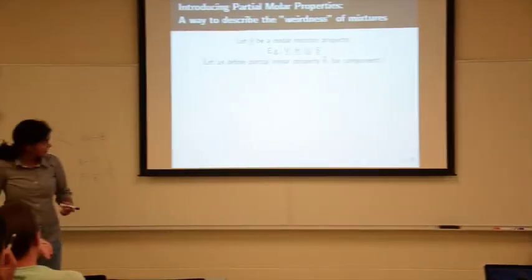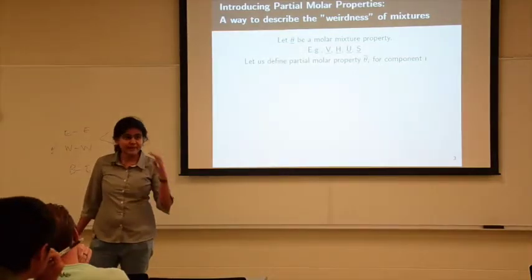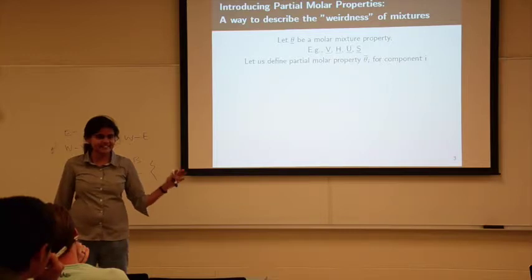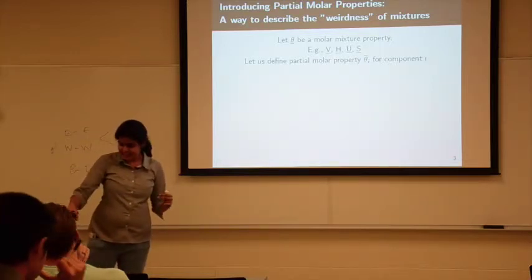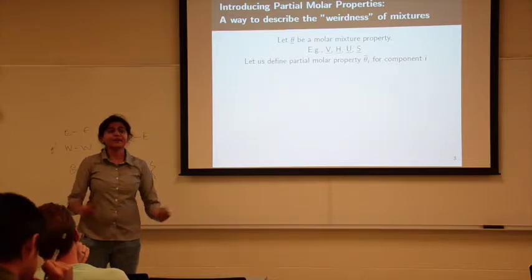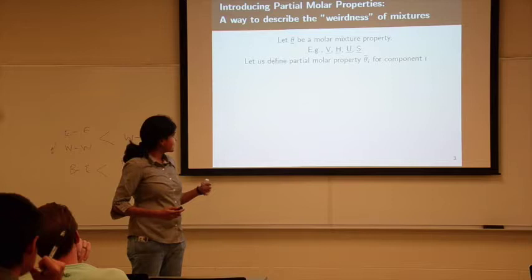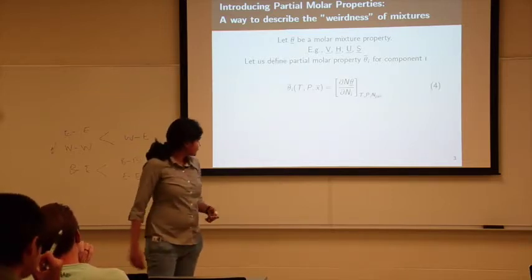We're going to define a new term: θ overscore subscript i. Be really mindful when using an underscore versus an overscore. Things are never going to be the same after this class because you'll keep getting mixed up. In fact, in the handouts, I corrected many things by hand. Just keep in mind that overscores are used for partial molar properties. This is a partial derivative evaluated at constant temperature, pressure, and keeping the number of moles of other components constant.